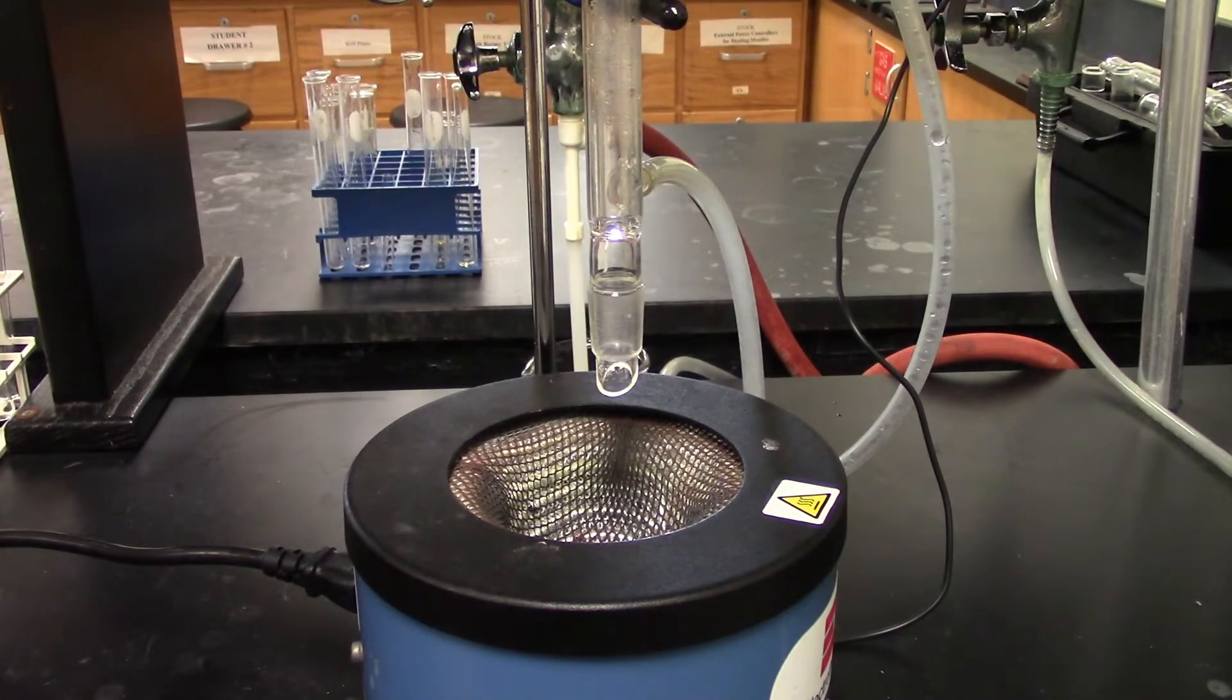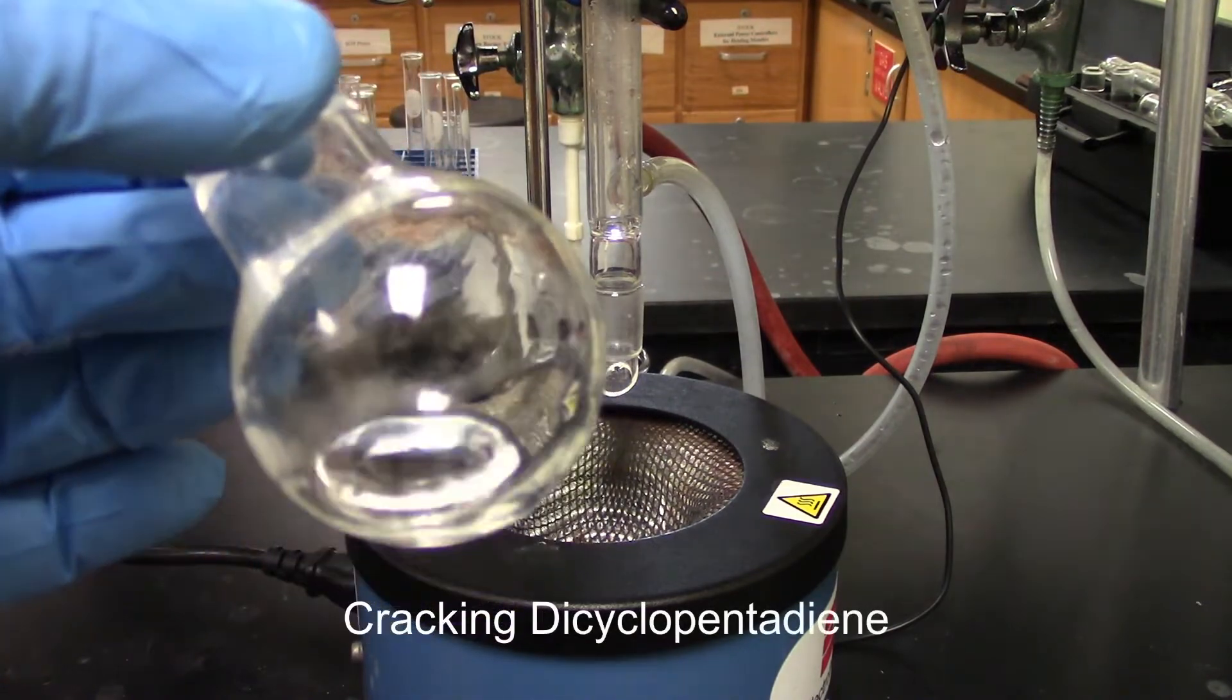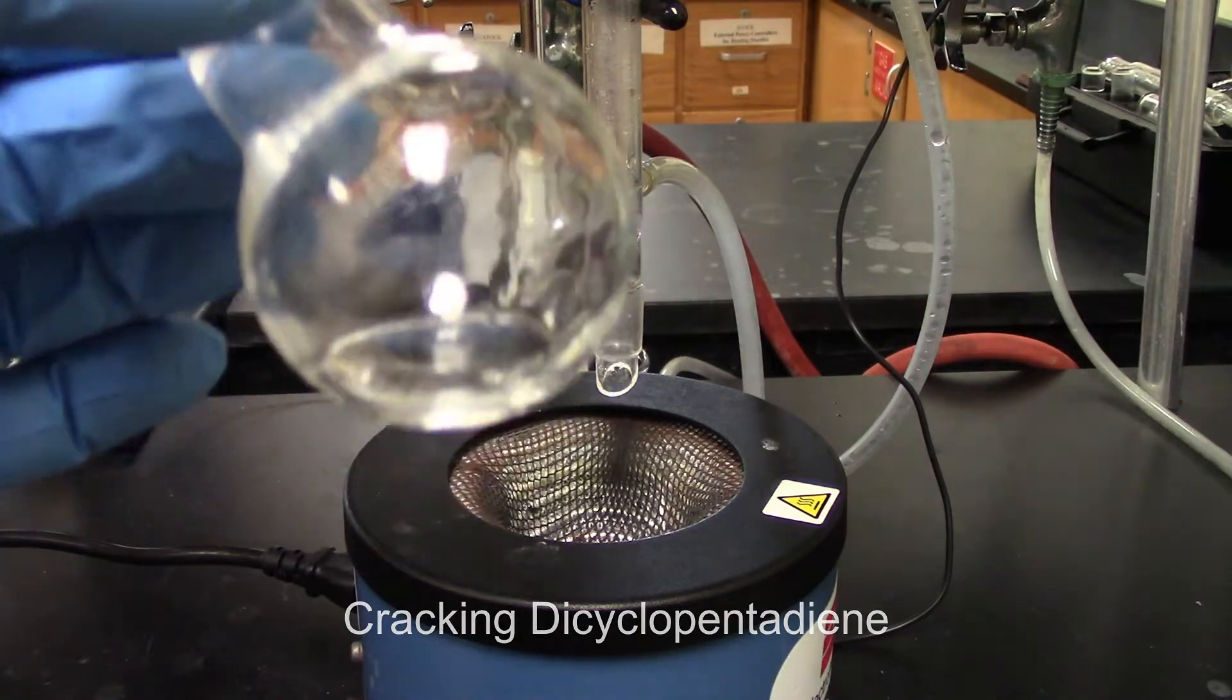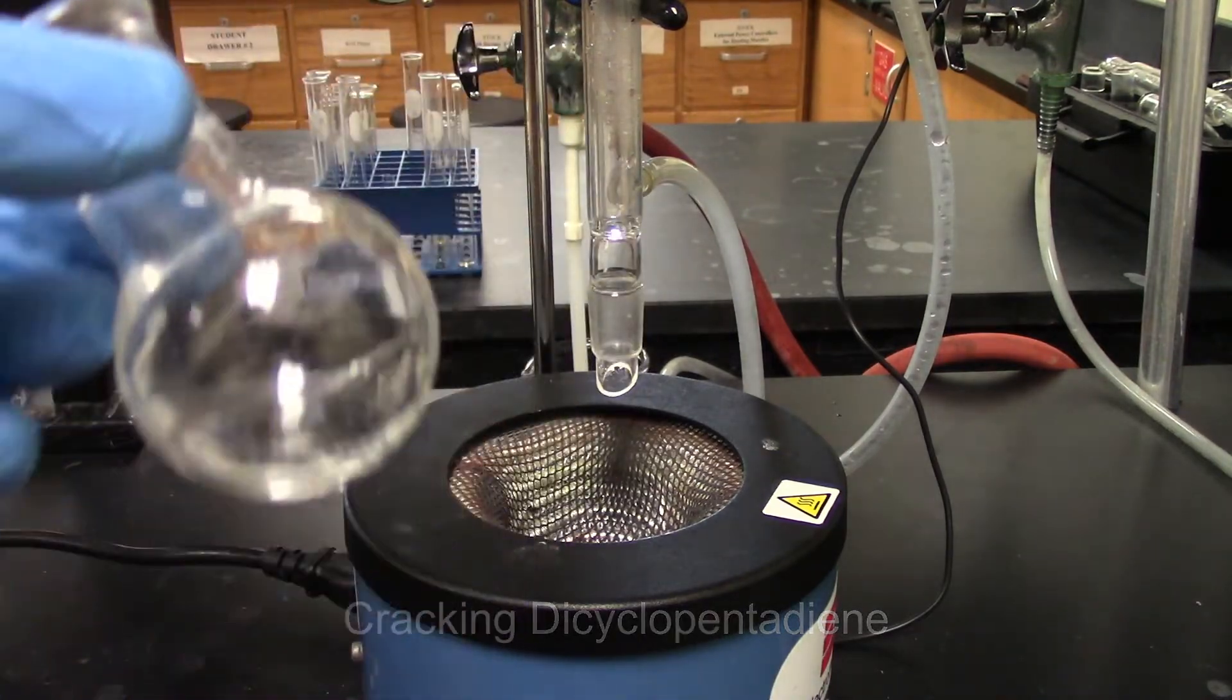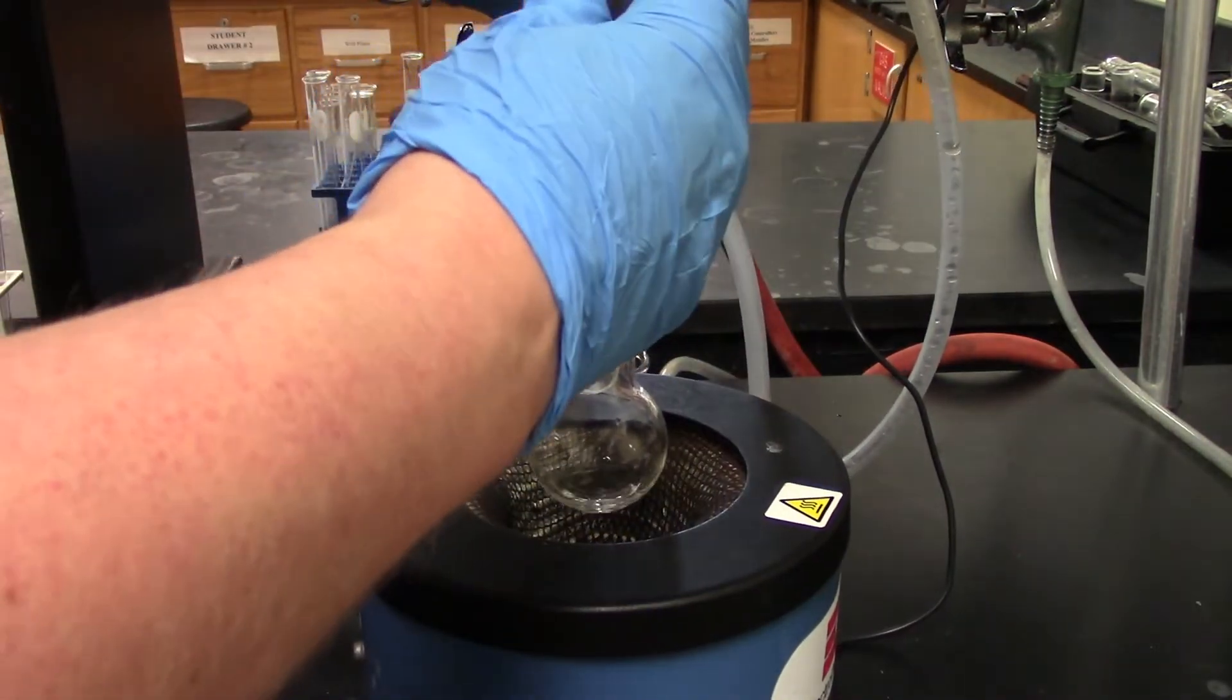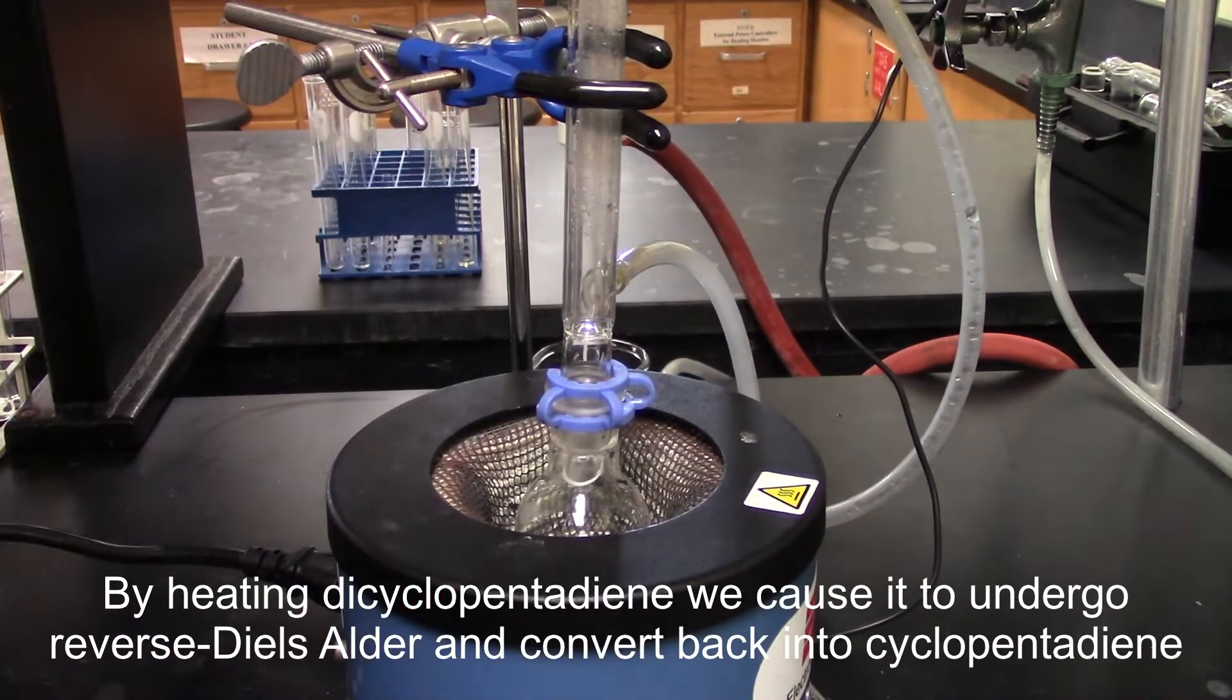Alright, so the first part of this experiment we're going to take our dicyclopentadiene here. It's not going to look much different than regular cyclopentadiene, but because this has already undergone a Diels-Alder reaction, we need to break it down through retro Diels-Alder synthesis. So to do this, we're going to hook it up to our heater and we're going to turn it on.